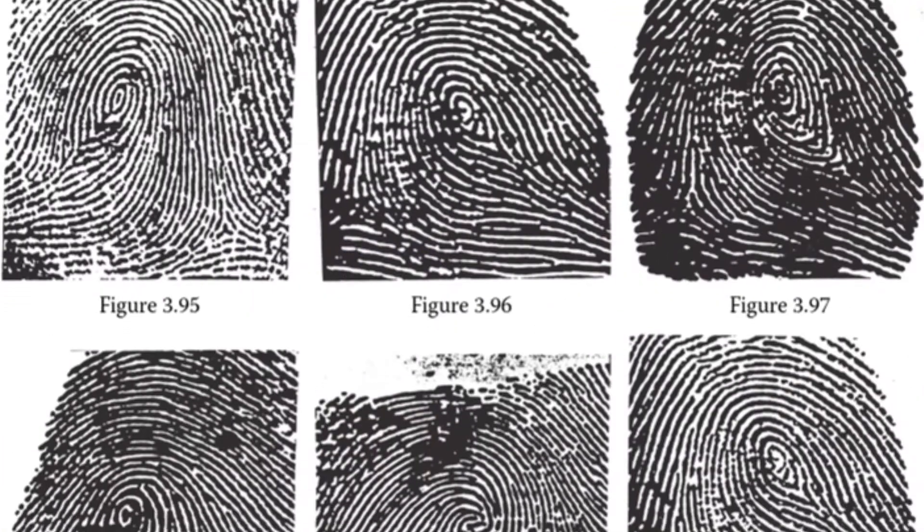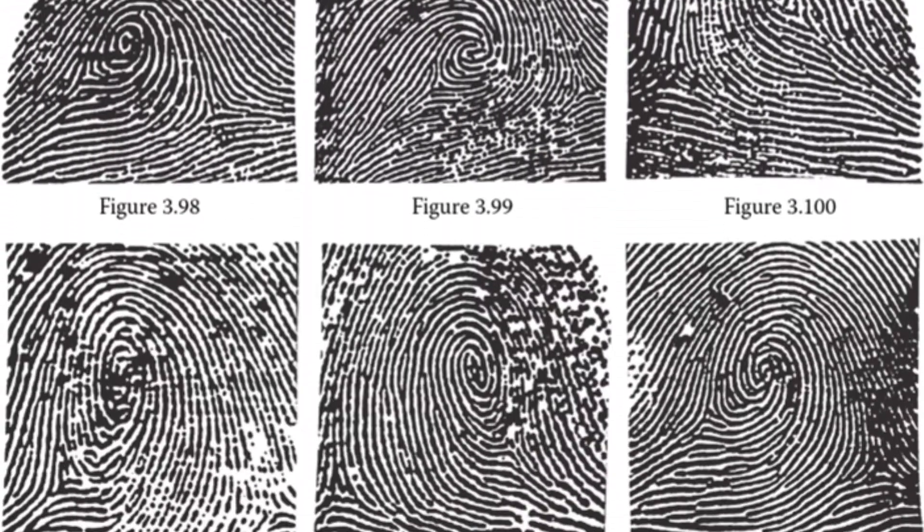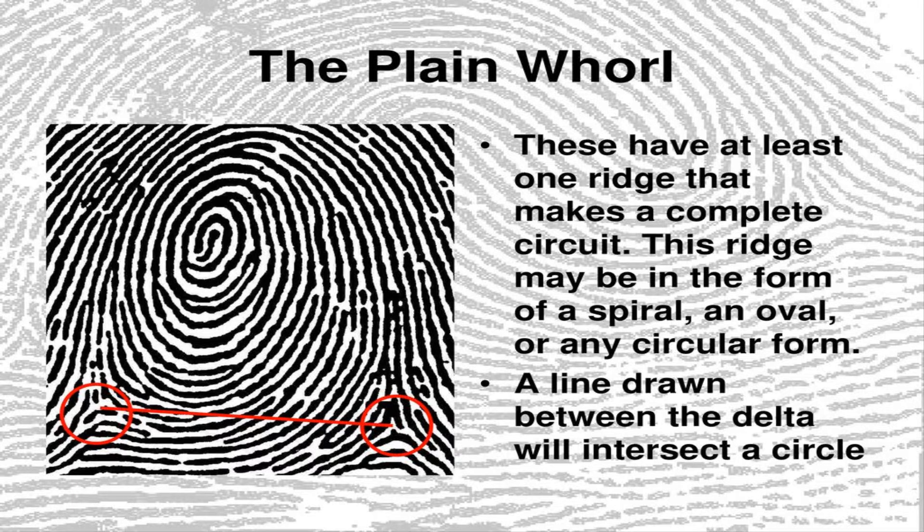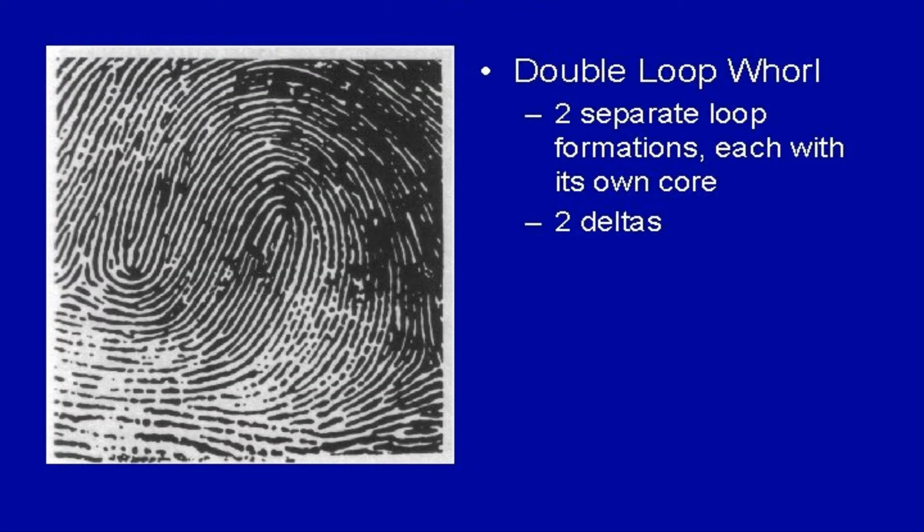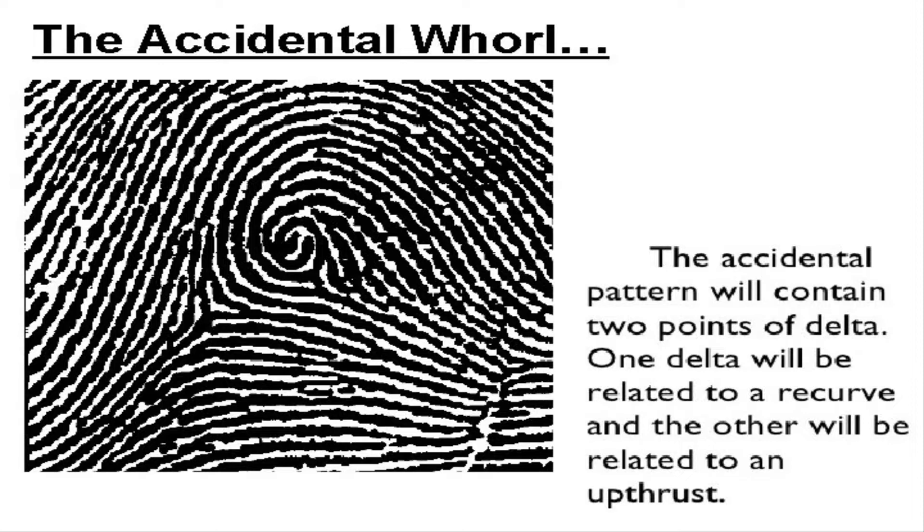For example, there are four groups of whorls: plain, which are concentric circles; central pocket loop, which is a loop with a whorl at the end; double loop, which are two loops that create an S-like pattern; and accidental loop, which is an irregular shape.